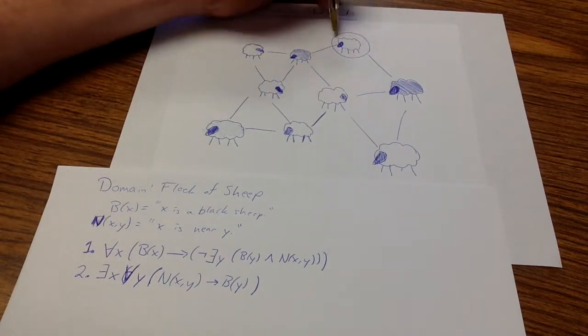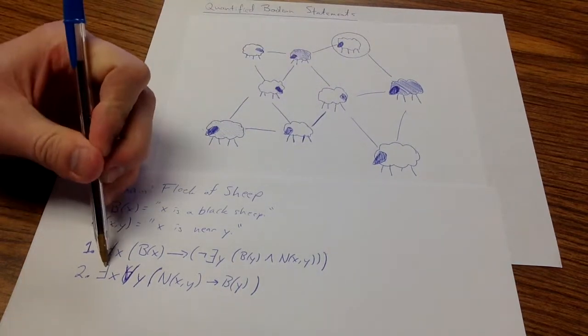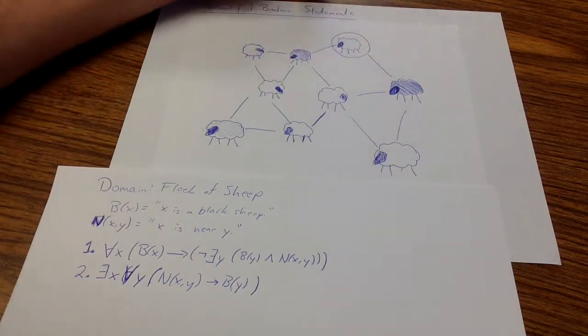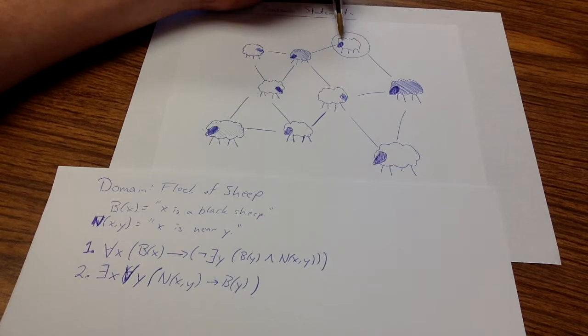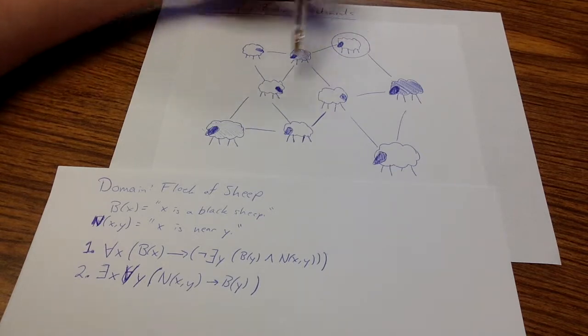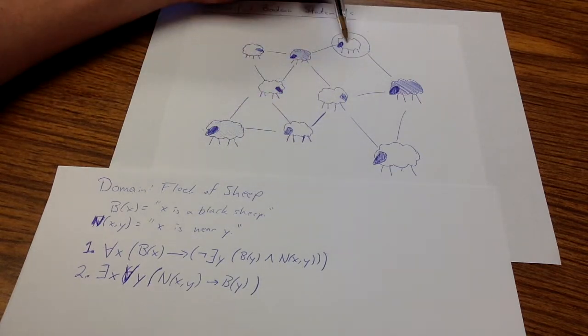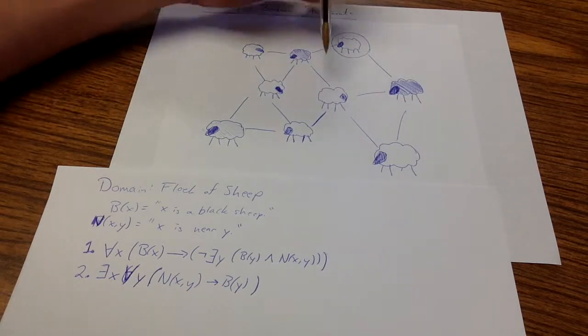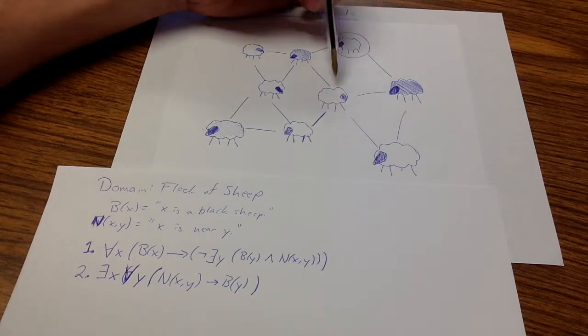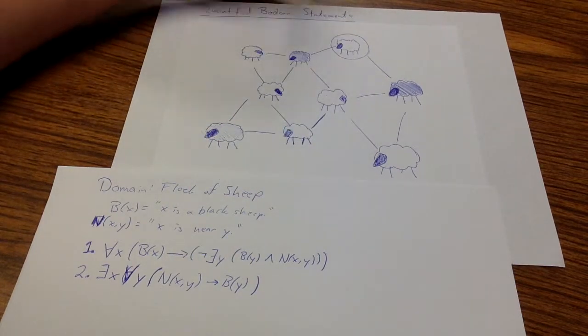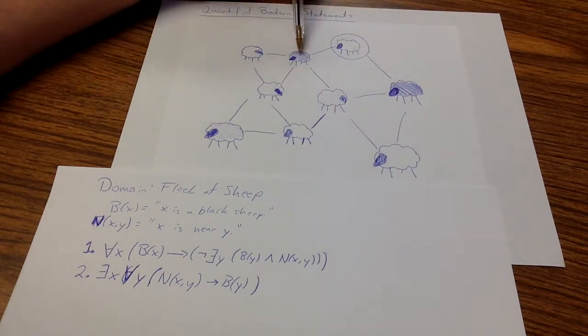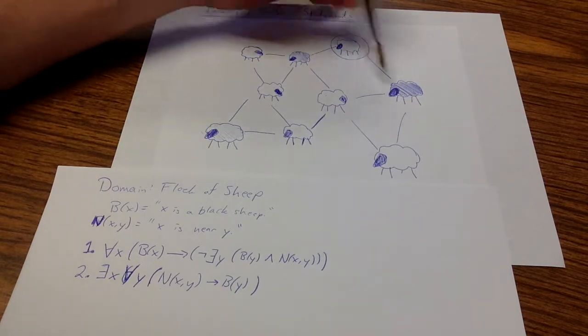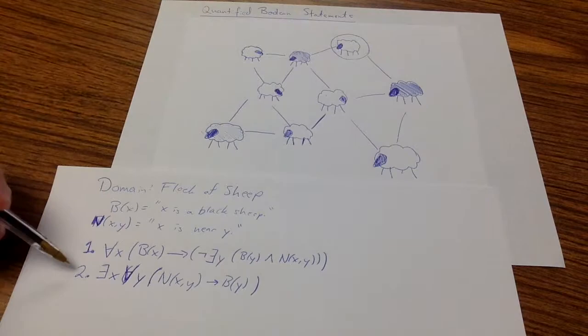Look here. This is an example we can use to show that this is true. So this sheep here has two black neighbors. If I take this as being my x, my specific x, and I look at any other sheep y, either, like for instance, this sheep is not near this sheep, so therefore the implication is satisfied. But these two sheep, the implication is necessary, where these are the ones that are nearby, but they are both black. And therefore, this statement is true.